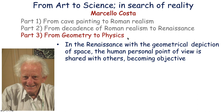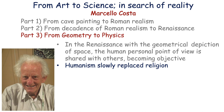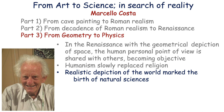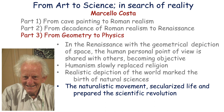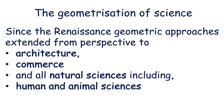Summarizing: in the Renaissance, with the geometrical depiction of space, the human personal point of view is shared with others, becoming objective. Humanism slowly replaced religion. The human being became central in the art of the Renaissance, and realistic depiction of the world marked the birth of natural sciences. This naturalistic movement secularized life and prepared a scientific revolution. Indeed, this process of geometrization of science started with the Renaissance geometric approaches, which extended from perspective to architecture.